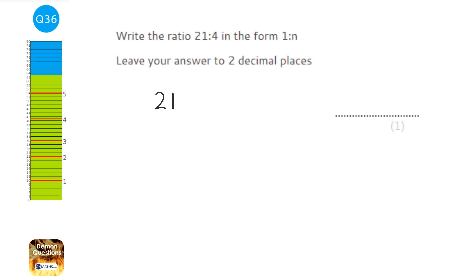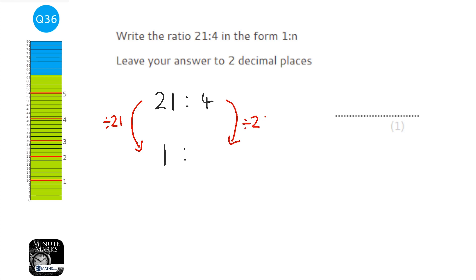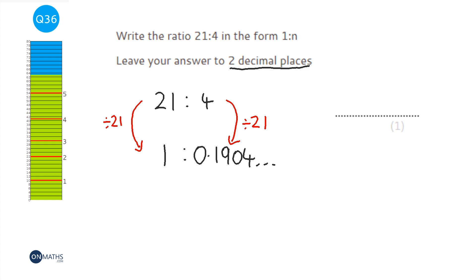This question asks us to change a ratio so it's in the form 1:n. We take the 21 and divide by 21 to get 1 on the left-hand side, then divide the right-hand side by 21 as well: 4 ÷ 21 = 0.1904... ≈ 0.19. So the answer is 1:0.19.